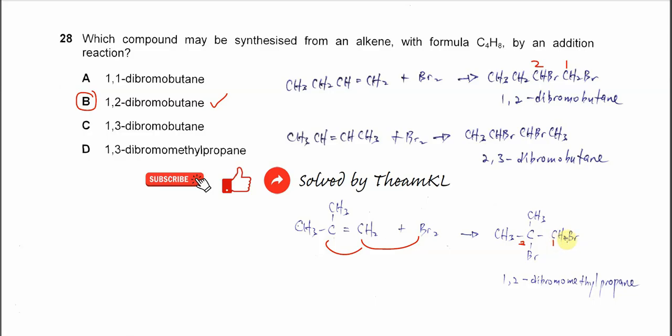First carbon has one bromine, second carbon has another bromine. So it's 1,2-dibromo-2-methylpropane. Because D is 1,3-dibromo-2-methylpropane, this one is also not the answer.